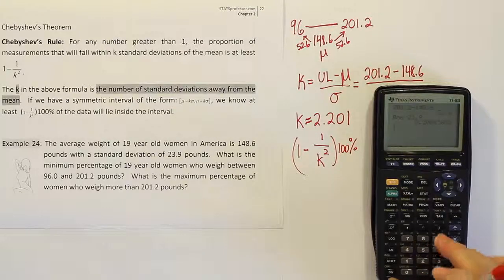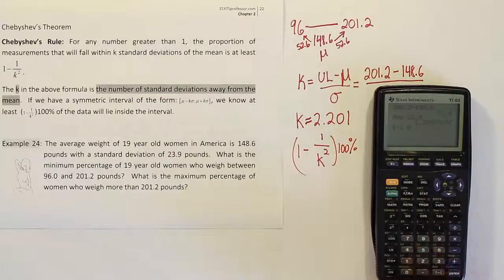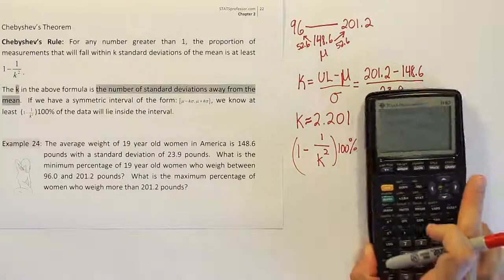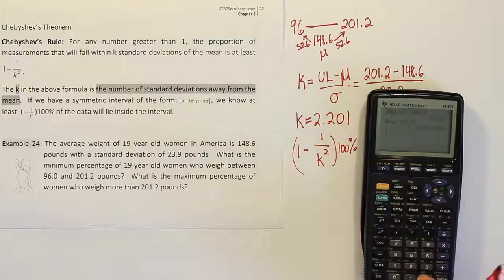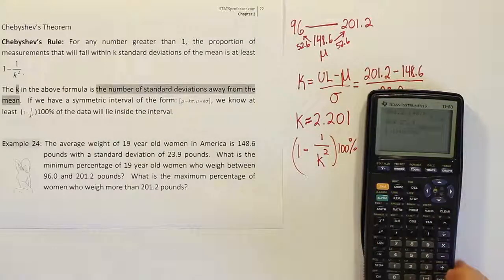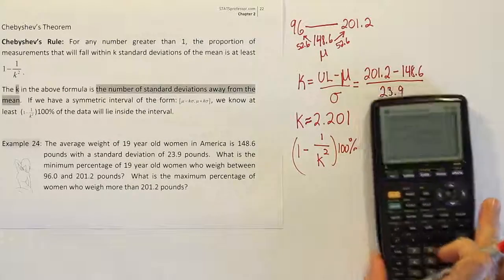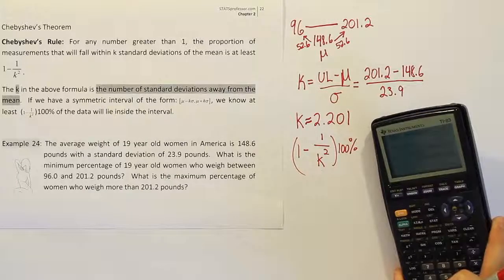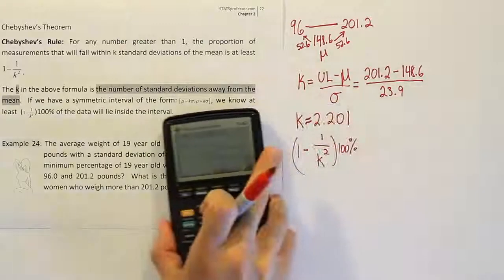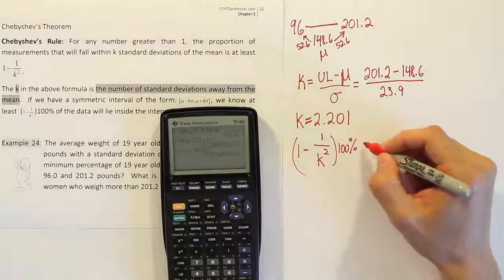So I'm going to do 1 minus 1 divided by the 2.201. But I have that number still in my calculator. So I'm going to hit second answer and square it. So I'm just taking the number I had before and squaring it. So when I do that in my calculator, 1 minus that number, I get 0.7935, et cetera.